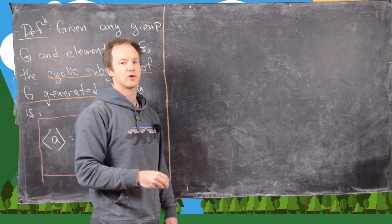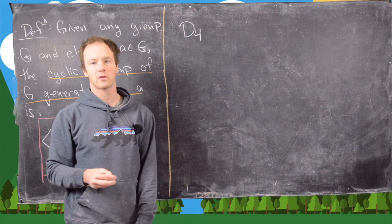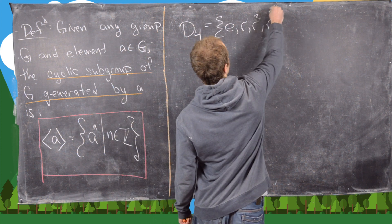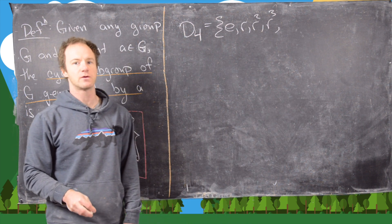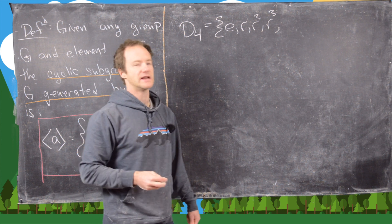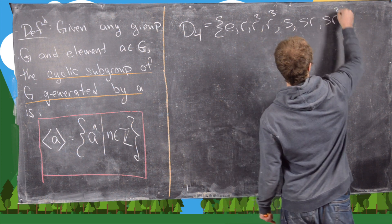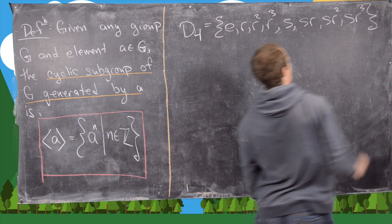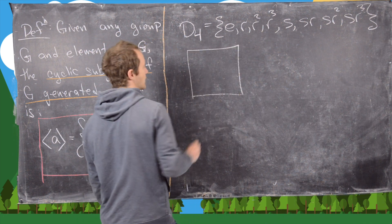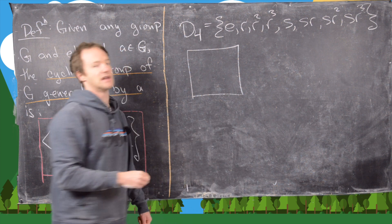For our next example we look at the dihedral group D4, the symmetries of the square, which has 8 elements: E, R, R squared, R cubed (with R to the 4th equal to the identity, representing four 90-degree rotations), and then S, SR, SR squared, SR cubed — four rotations and four reflections. We have a square with one reflection axis and a 90-degree rotation.